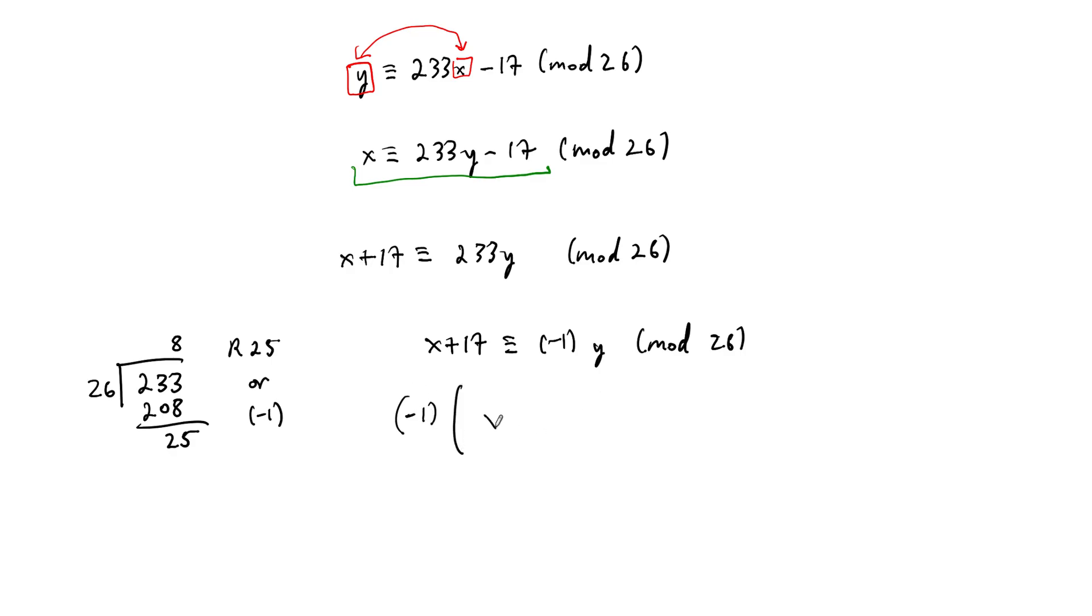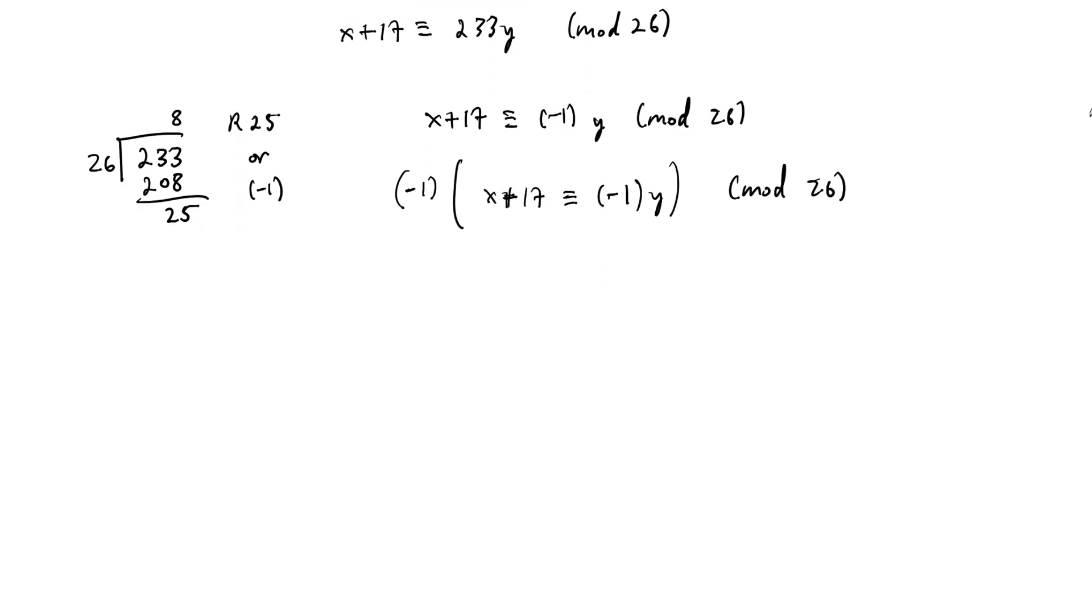Again, multiply the entire congruence by negative 1. And this is, again, all mod 26, reduce mod 26. And let's see what happens.